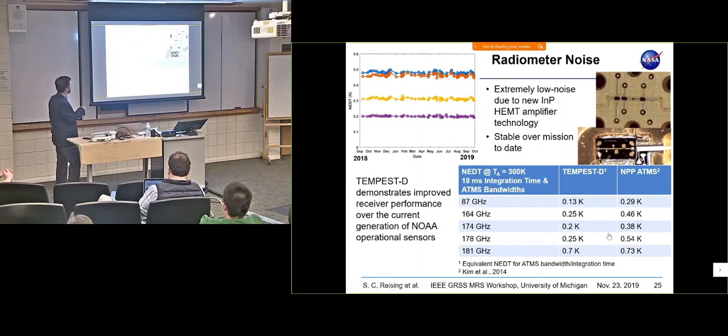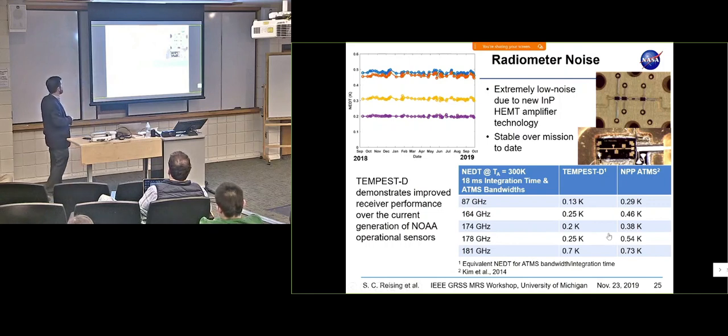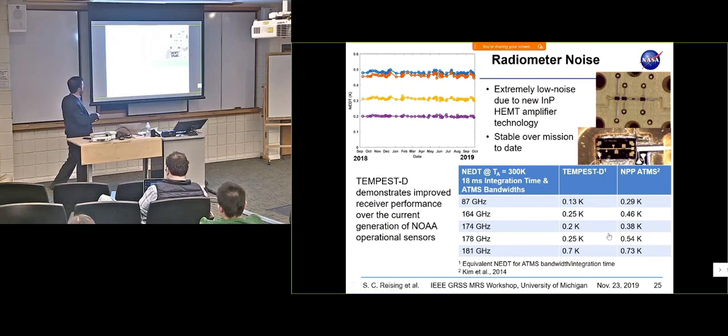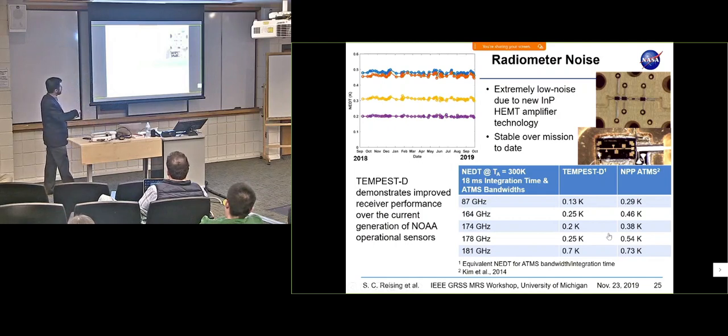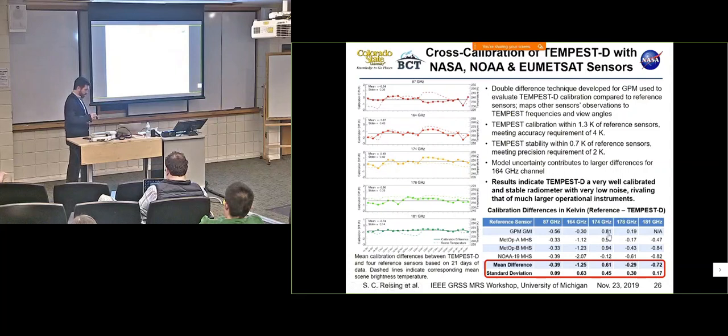A little more about the instrument. We have a very stable, extremely stable over the mission to date. These are the five any delta Ts or radiometric resolution for the five channels from the lowest frequency to the highest frequency. And this is over 13 months here of the mission. So it's been extremely stable. Then when we compare it to the operational instrument on the post preparatory project satellite, the ATMS made by Northrop Grumman, here are their numbers for their radiometric resolution.